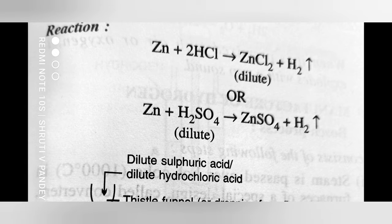After the reaction, as we used zinc granules with sulfuric acid, you can also use hydrochloric acid in place of sulfuric acid. If you use hydrochloric acid you will get zinc chloride and hydrogen gas will be evolved. If you use dilute sulfuric acid, you get zinc sulfate and hydrogen gas.